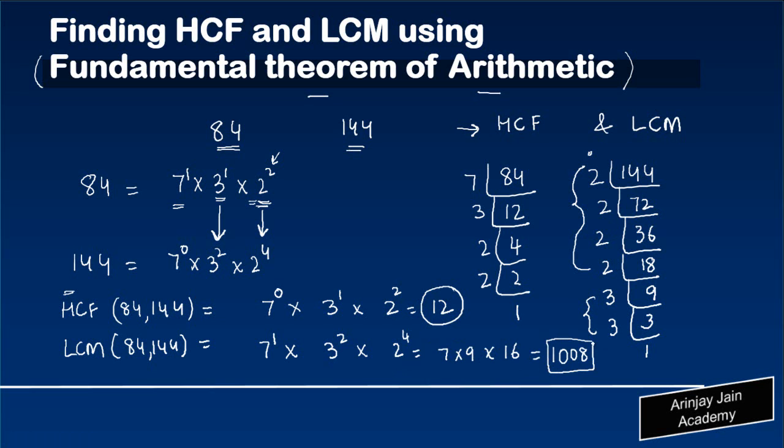And the answer to this is 1008. So 1008 is the least common multiple of 84 and 144.